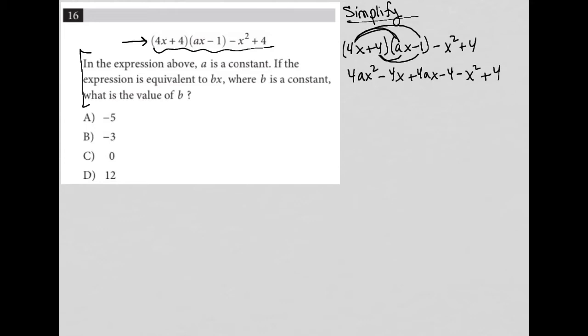So to simplify this, the 4ax squared and the x squared are like terms. So I'm going to group those together and say I have 4ax squared minus x squared. Also, the minus 4x and the plus 4ax should go together because those are both x terms. So I have minus 4x plus 4ax. And then lastly, this negative 4 and this positive 4 will just cross out. Negative 4 plus 4 is just 0. That's as simple as I can get here.